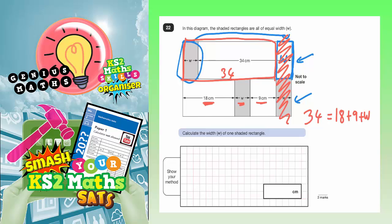So, now you can simplify that. The 34, well, we can't really simplify that, but we can certainly simplify 18 plus 9. 18 plus 9 is 27, and we've got plus W.